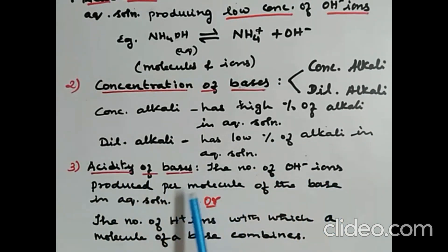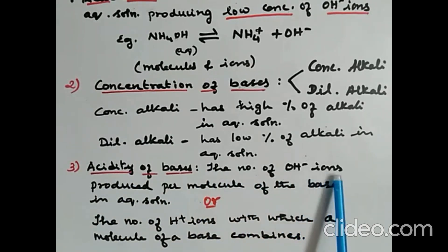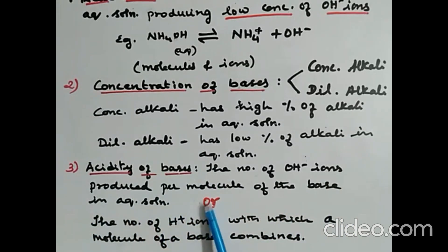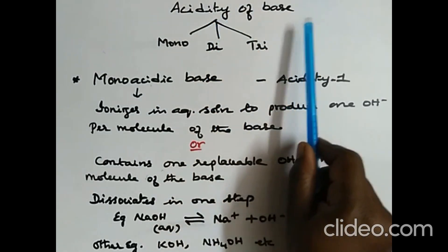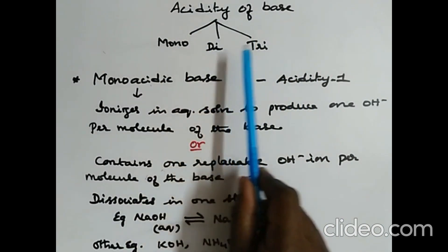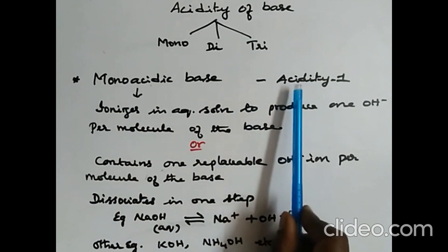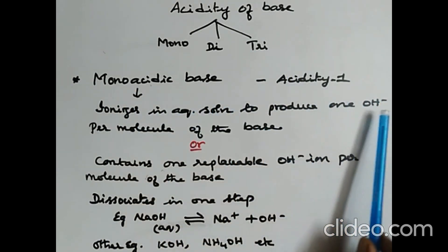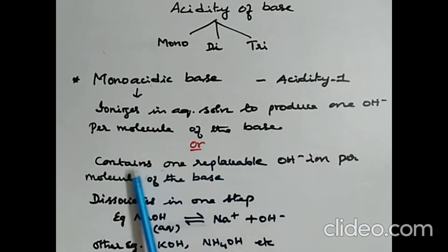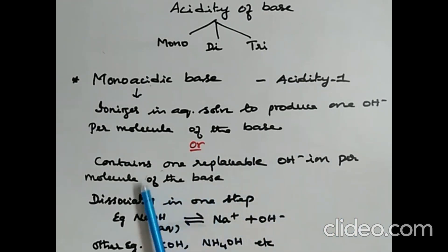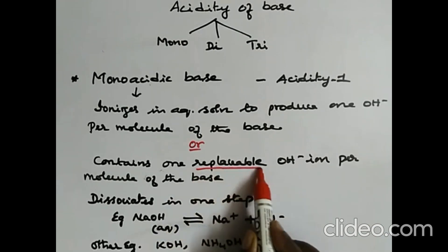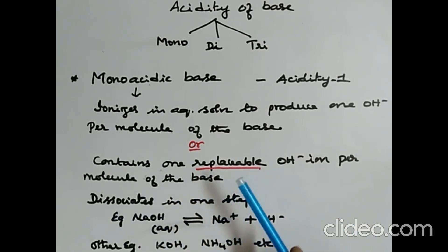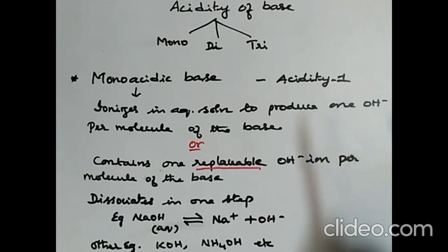The next classification is based on the acidity of bases — the number of hydroxyl ions produced per molecule of the base in aqueous solution. You remember the basicity of an acid is the number of hydronium ions produced per molecule. The acidity of a base can also be defined as the number of H+ ions with which a molecule of a base combines. Based on acidity, bases are classified into monoacidic, diacidic, and triacidic bases.